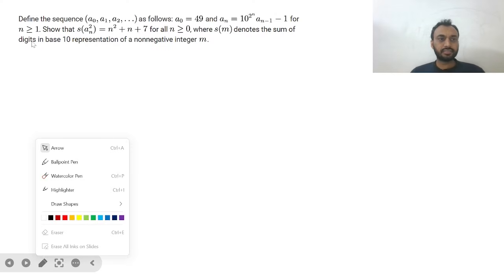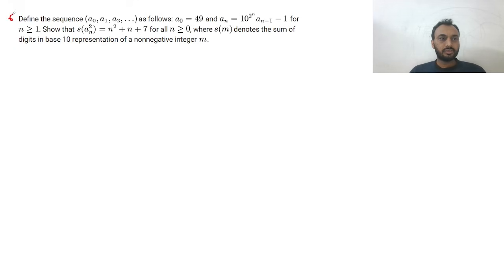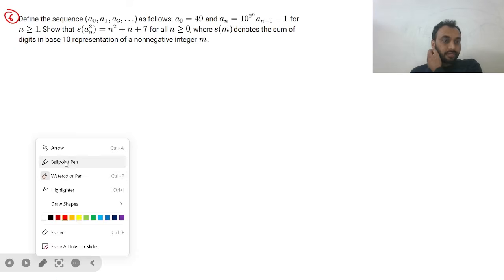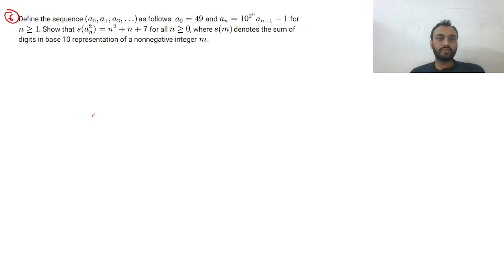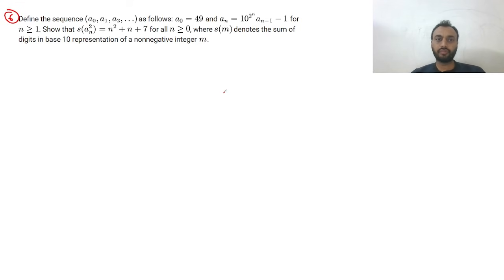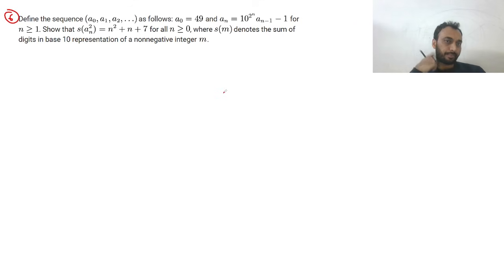Hi guys, let us see question number 6 of RMO 2025 KV. In this question we are given a sequence A₀, A₁, and so on. A₀ is 49 and Aₙ is related to Aₙ₋₁ for N greater than or equal to 1. We need to show that the sum of digits of Aₙ² equals N² + N + 7 for all N ≥ 0, where S(M) denotes the sum of digits in the base-10 representation of a non-negative integer M.